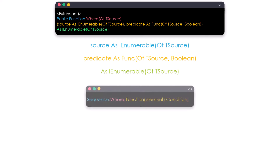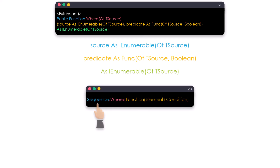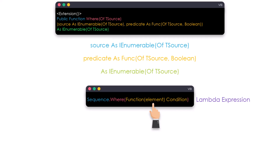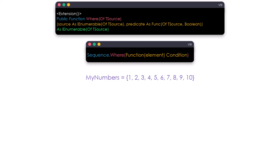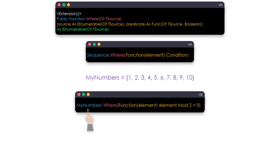The syntax of this overload is as follows. The first input parameter is the sequence we want to filter. Inside the braces we have a lambda expression, where the element variable represents the elements inside the sequence. For example, suppose we have a collection of integer numbers called myNumbers and we want to retrieve the even numbers. We can use the WHERE method as follows — here I added the collection I want to filter, and inside the braces I have a condition to return only the even numbers. As output I will get a collection containing only the even numbers.